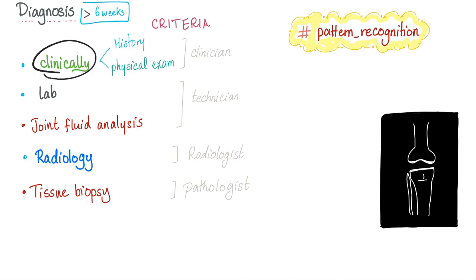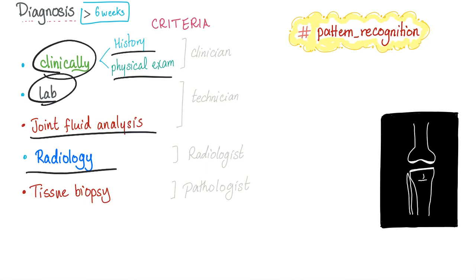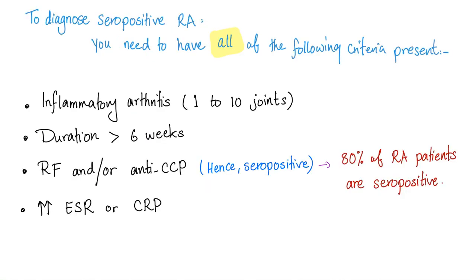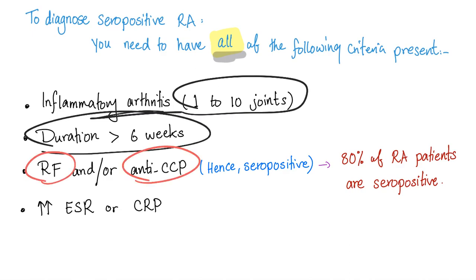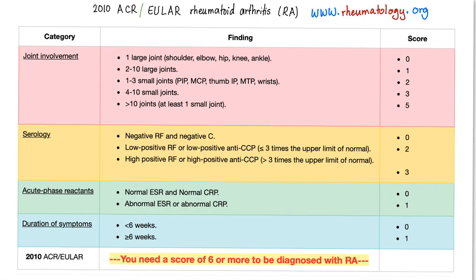Diagnosis of rheumatoid depends on clinical history and physical exam, lab results, joint fluid analysis, and radiology — the most accurate test is tissue biopsy. Diagnostic tips: you need inflammatory arthritis in 1 to 10 joints, duration greater than 6 weeks, positive rheumatoid factor and anti-CCP, and high ESR or CRP. These are the 2010 criteria for rheumatoid arthritis; updated criteria are available at rheumatology.org.